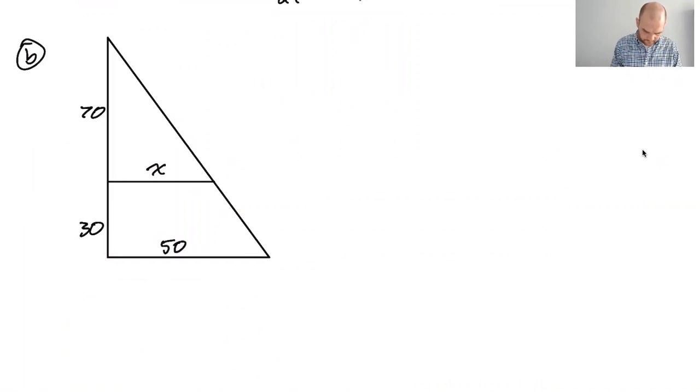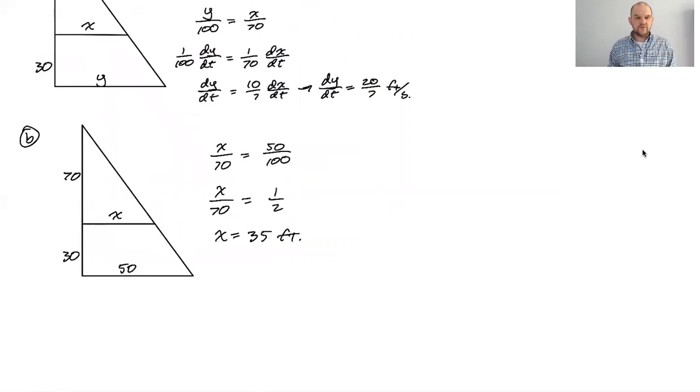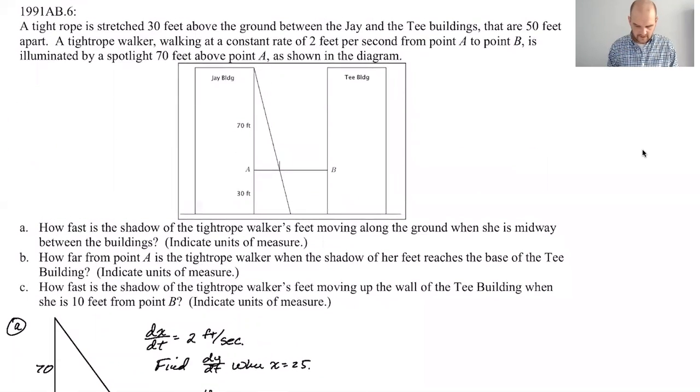So this will be 50, I think this is the same thing, like can I do X over 70 equals 50 over 100? So X over 70 is one half, so X is 35 feet. So she will be 35 feet from building J when her shadow finally hits the building.